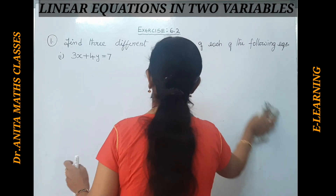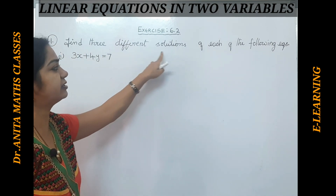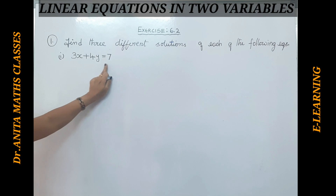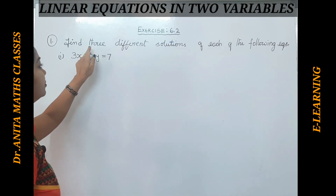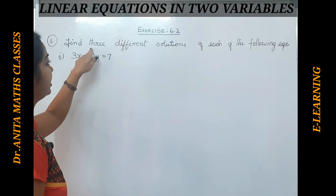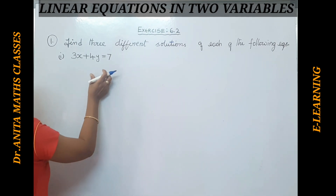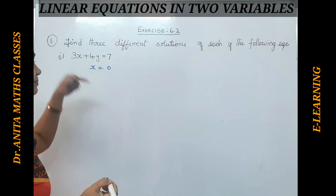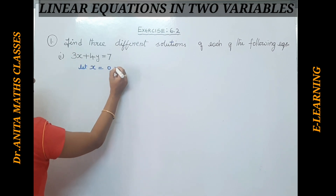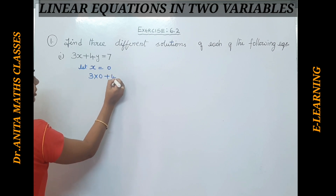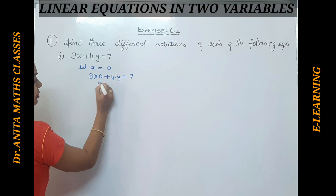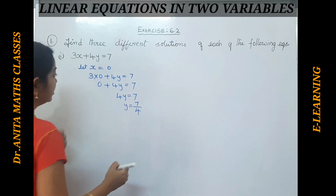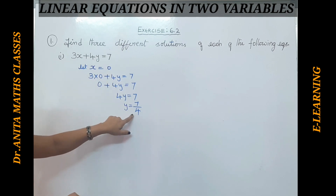Now let's start the exercise problems. The first question asks: find three different solutions of each of the following equations. For the first equation 3x + 4y = 7, we substitute x equal to 0. So 3 into 0 plus 4y equals 7, which gives 4y equals 7, and y equals 7 by 4.